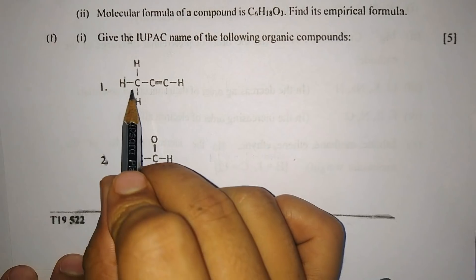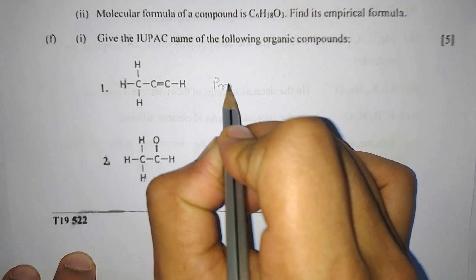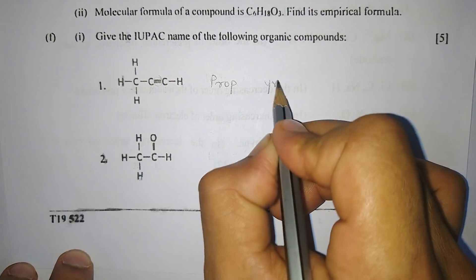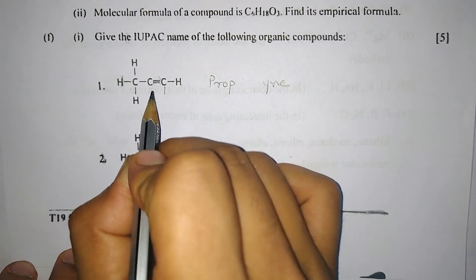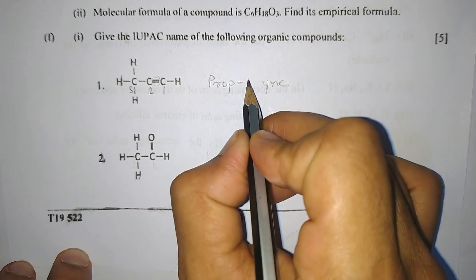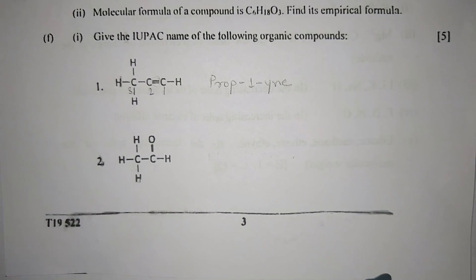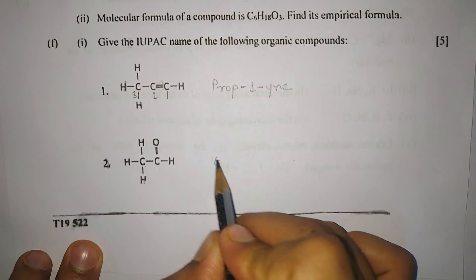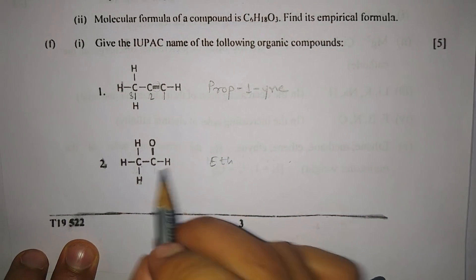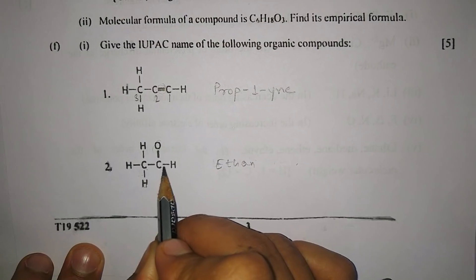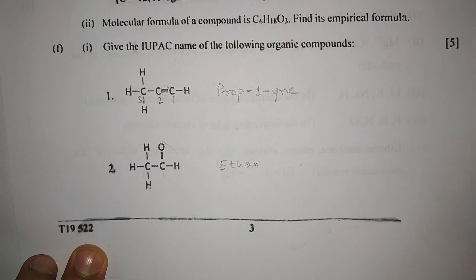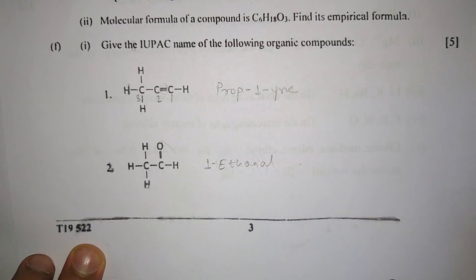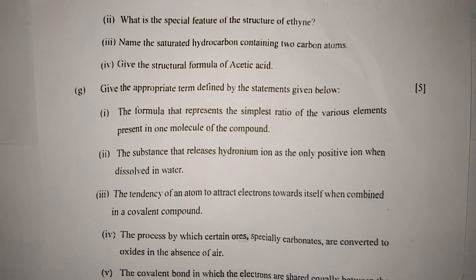Part F, number one: Give the IUPAC name of the following organic compounds. We have the first compound - there are three carbon atoms, so the word root will be prop. As there is one triple bond, the suffix will be yne, and since it is present at the first carbon atom, it will be prop-1-yne.